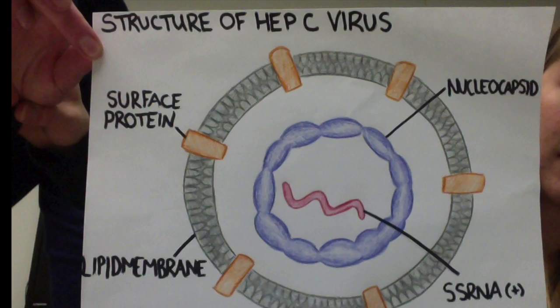Here is the structure of a hepatitis C virus. The viral envelope is made of a lipid membrane. There are surface proteins on the envelope. There is a protein capsule that protects the genetic material of the virus. This is called the nucleocapsid. The single-stranded RNA positive is also inside.